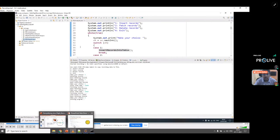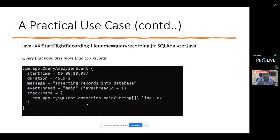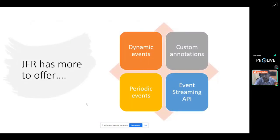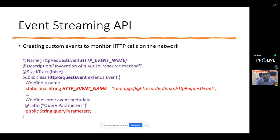This demonstrated how one can use the Java Flight Recorder to understand different operations in a database. Beyond recording flight events, JFR has a lot more to offer: periodic events, dynamic events, custom annotations, and the Event Streaming API. I'll focus on the Event Streaming API, which can be leveraged in current projects to monitor HTTP calls.